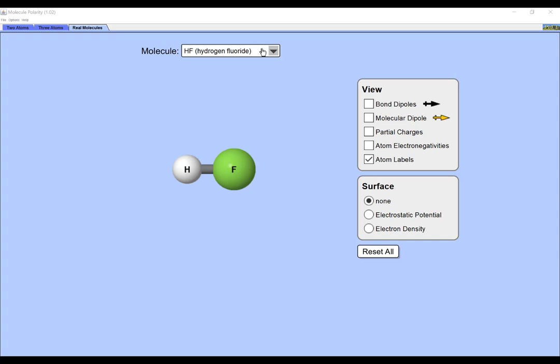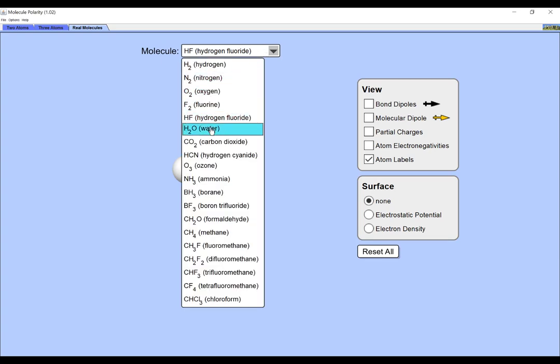Why is electronegativity important? Well, here's an example. The water molecule, H2O, is made of two atoms that have quite different electronegativities.